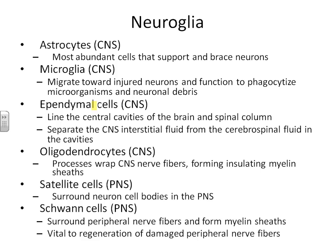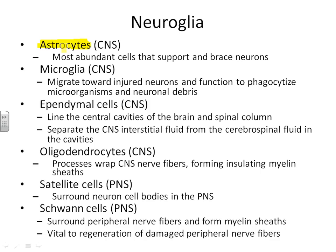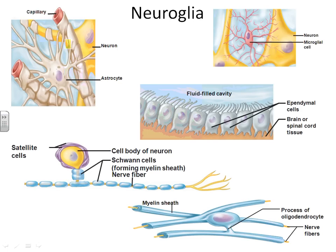The first type of neuroglial cells are astrocytes. You have more astrocytes than any other neuroglial cell, and their job is to support and brace the neurons. Looking at this picture, the astrocyte has arms that reach up and grab hold of the neuron, forming a scaffolding — a little network to hold all of the neurons in place. While holding neurons in place, the astrocyte also helps take nutrition from nearby capillaries and ensures that the neuron receives it.